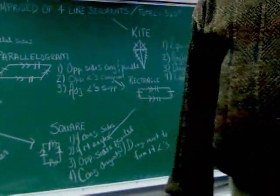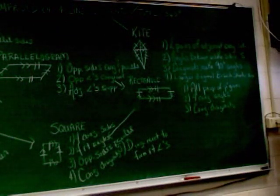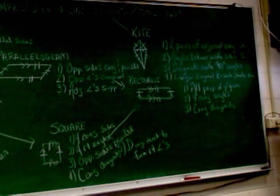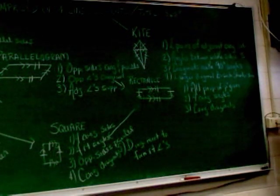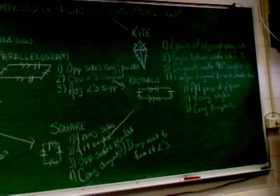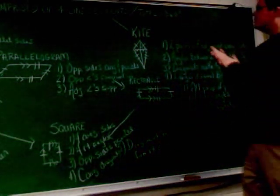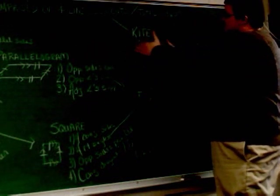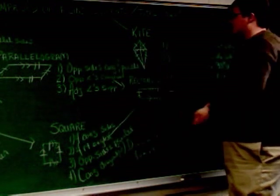A kite is exactly what you think it is — the same thing as the toy you play with on a windy day. Here are the properties of a kite. First, it has two pairs of adjacent congruent sides. Adjacent simply means sides that touch. So it's got two sets of sides that are the same — these two top sides would have the same length, and these two bottom sides would have the same length.